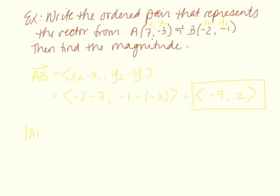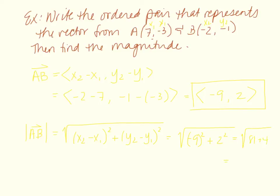For the magnitude of AB, I take the square root of (x2 minus x1) squared plus (y2 minus y1) squared. I already found x2 minus x1 is negative 9, and y2 minus y1 is 2. So that's the square root of 81 plus 4, which is the square root of 85. The magnitude of that vector is root 85.